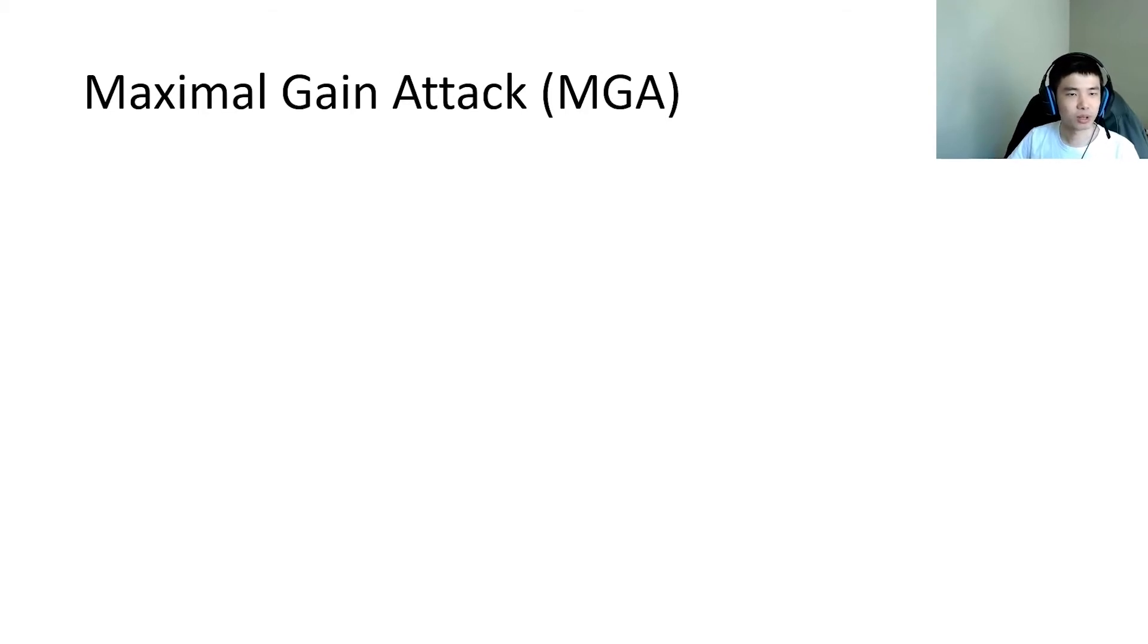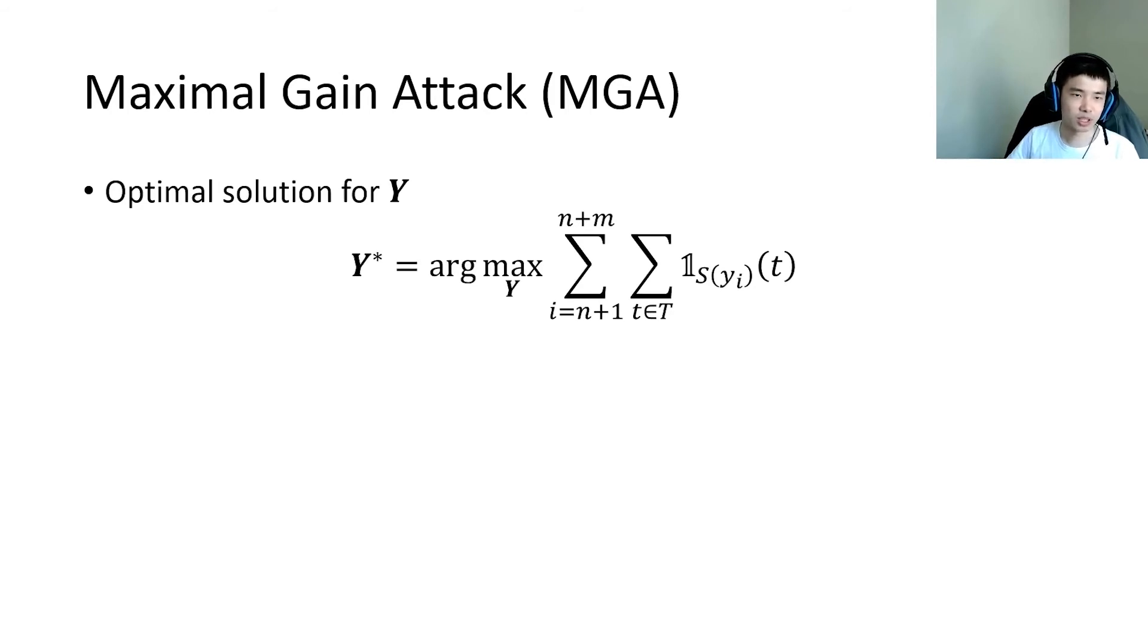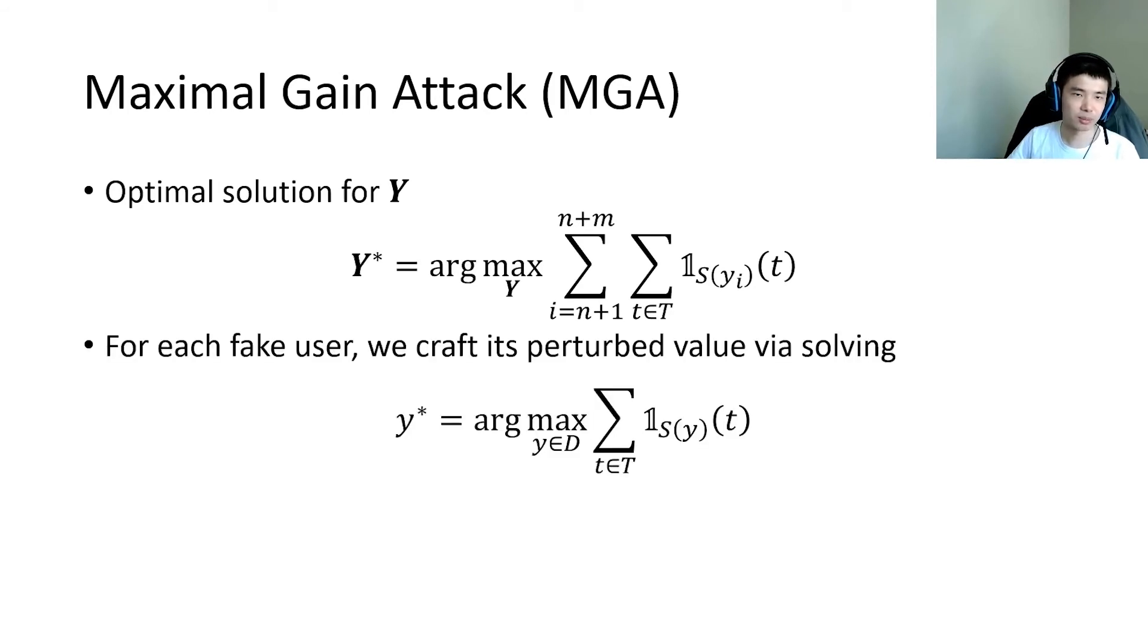Formally, we can rewrite the optimal attack as follows. For each fake user, we craft its perturb value by solving this problem. Intuitively, MGA maximizes the number of target items that y supports.